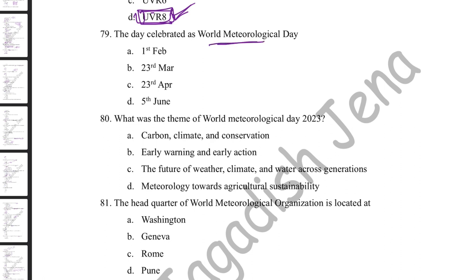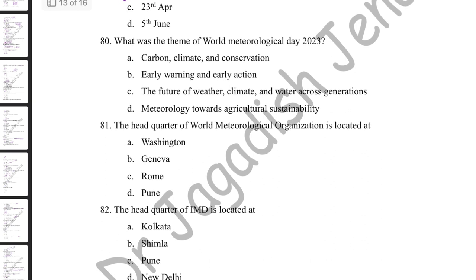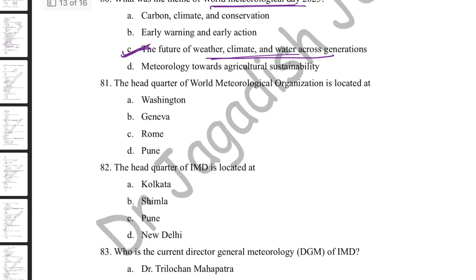World Meteorological Day is celebrated on 23rd March. The theme of World Meteorological Day 2023 was 'The Future of Weather, Climate and Water Across Generations.' The headquarters of the World Meteorological Organization (WMO) is in Geneva. The WMO was established in 1973.